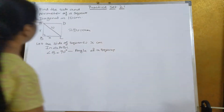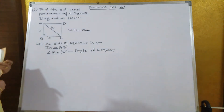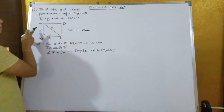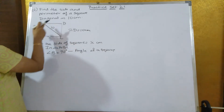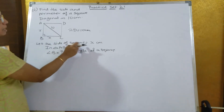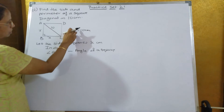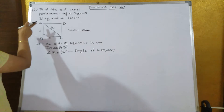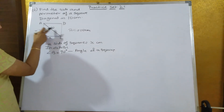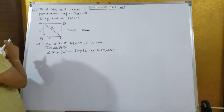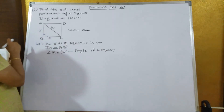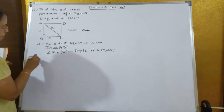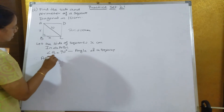Sum number 6: find the side and perimeter of a square when the diagonal is given. The diagonal AC is equal to 10 centimeters. Since all sides of a square are equal, let the side be x centimeters. In triangle ABC, angle B is equal to 90 degrees, because all angles of a square are 90 degrees. So triangle ABC is a right-angle triangle.